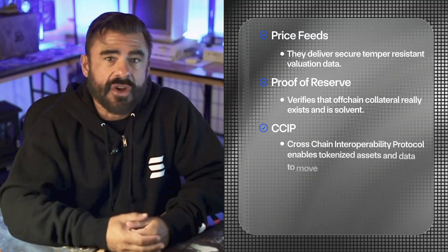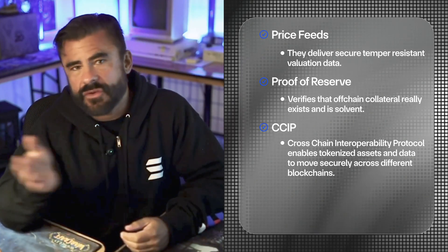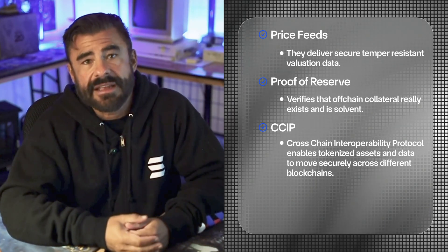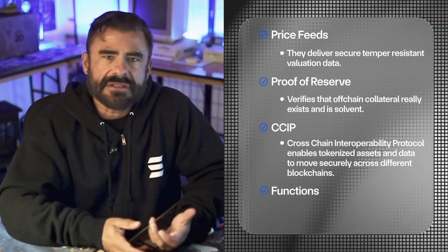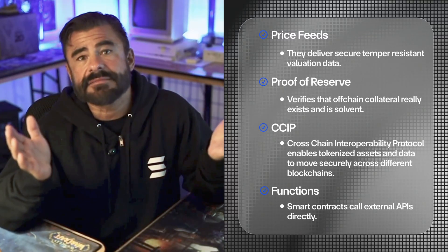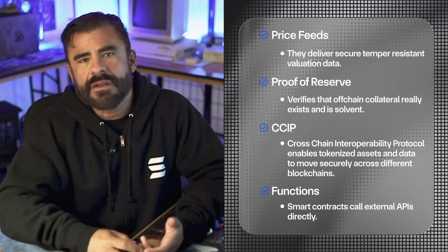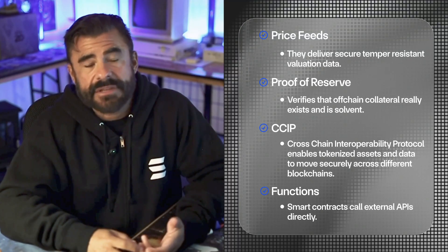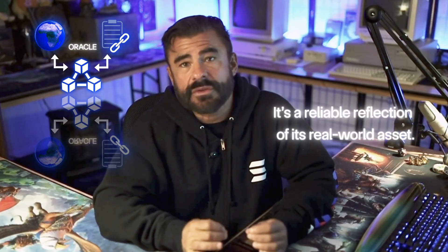CCIP, the cross-chain interoperability protocol, enables tokenized assets and data to move securely across different blockchains and even into traditional existing networks. And finally, functions: smart contracts call external APIs directly. That means you can plug into banking systems, payment rails, KYC providers, custody solutions, or even IoT devices for commodities. Put simply, oracles ensure that a token isn't just a number on a blockchain — it's a reliable reflection of its real-world asset.